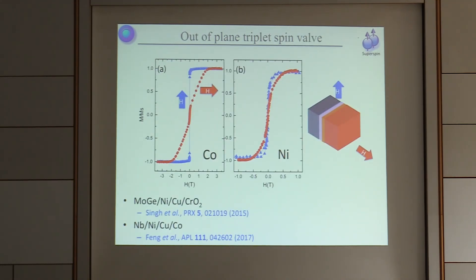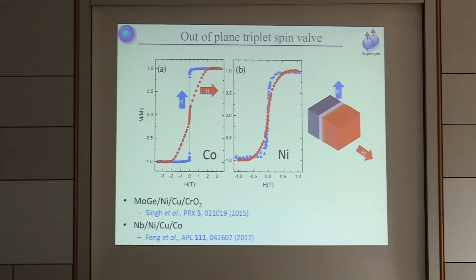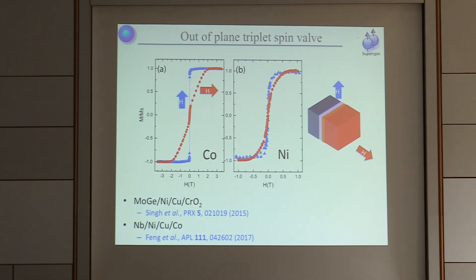This is the fundamental principle of the triplet spin valve: controlling the critical temperature by opening or closing a triplet proximity channel for the pairs to leak away into. This has been developed into much more impressive changes in critical temperature by Yan Arts using the chromium oxide system — changes above a Kelvin. The key thing here is that whereas the previous experiment involved in-plane fields and in-plane magnetizations, the large changes could only be achieved by applying out-of-plane magnetic fields to produce misorientation of the two magnetic layers.